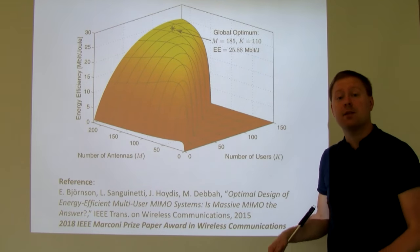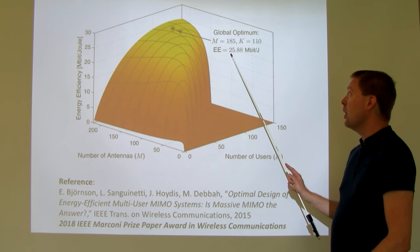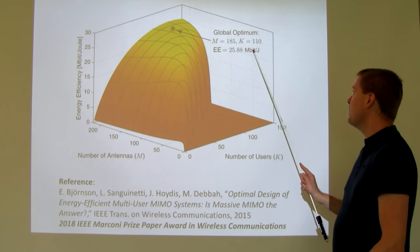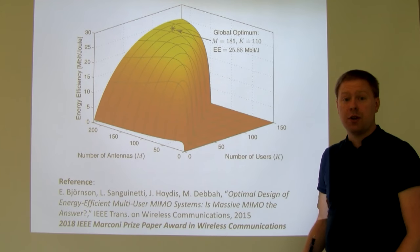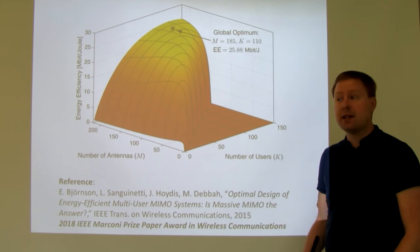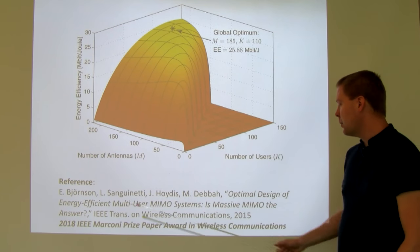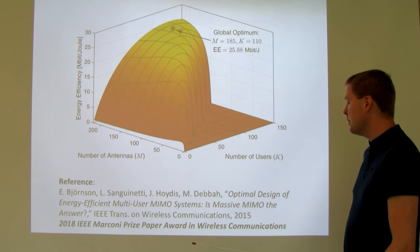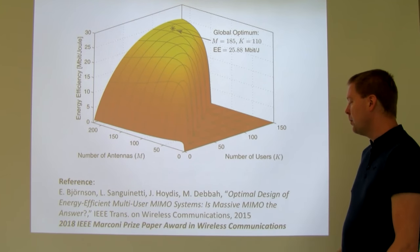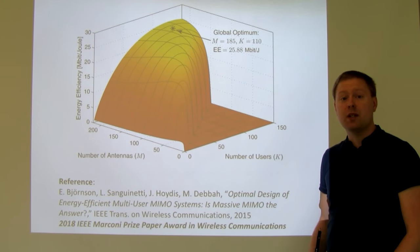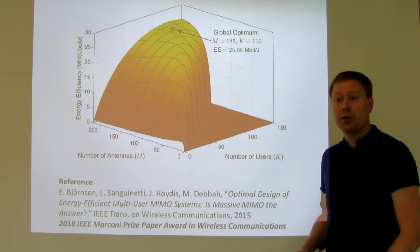This is a system with many antennas and many users — known as massive MIMO. The achievable energy efficiency is 25.88 megabits per joule, much larger than in current systems. Perhaps more important than the specific numbers is the fact that we can actually optimize the number of users and number of antennas as variables in future systems. This work was published in the paper 'Optimal Design of Energy Efficient Multi-User MIMO Systems: Is Massive MIMO the Answer?' which received the 2018 IEEE Marconi Prize Paper Award in wireless communications.